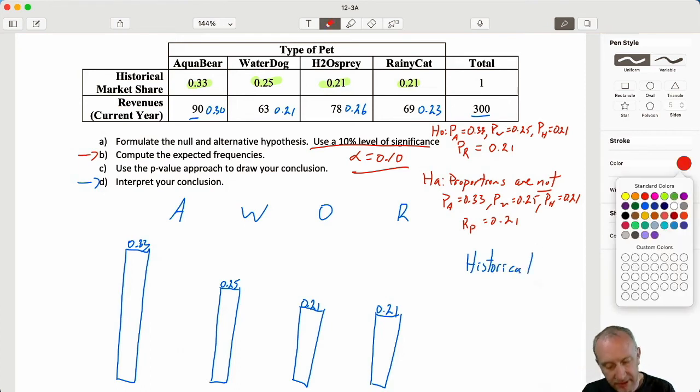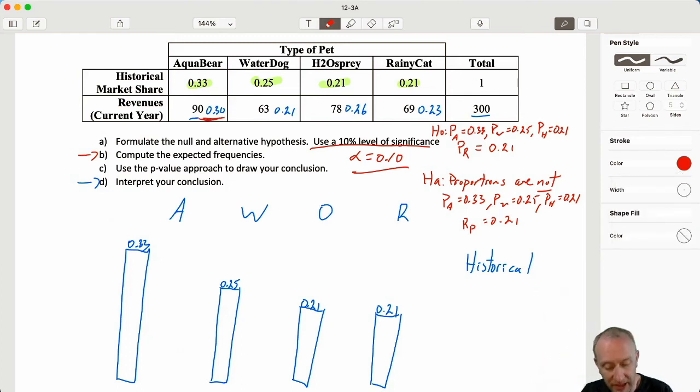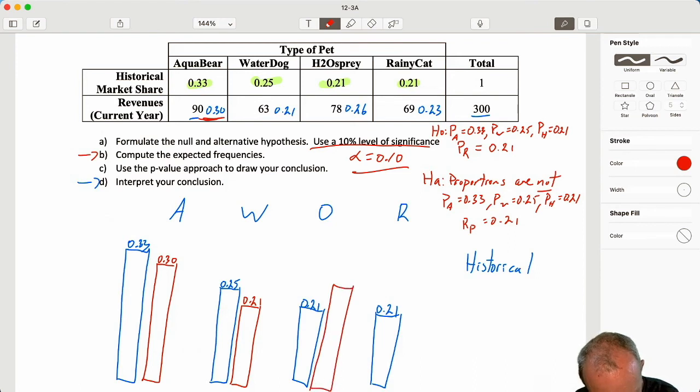Now let's look at current. So using these values, well, now I can see Aquabear fell. They fell to 30%. So something like this. Water Dog, they fell a little bit as well. 0.21%. H2 Osprey, well, they went up. And they're even higher than what Water Dog started at, so let's draw them something like this. And Rainy Cat, they're up just a little bit to 0.23%.